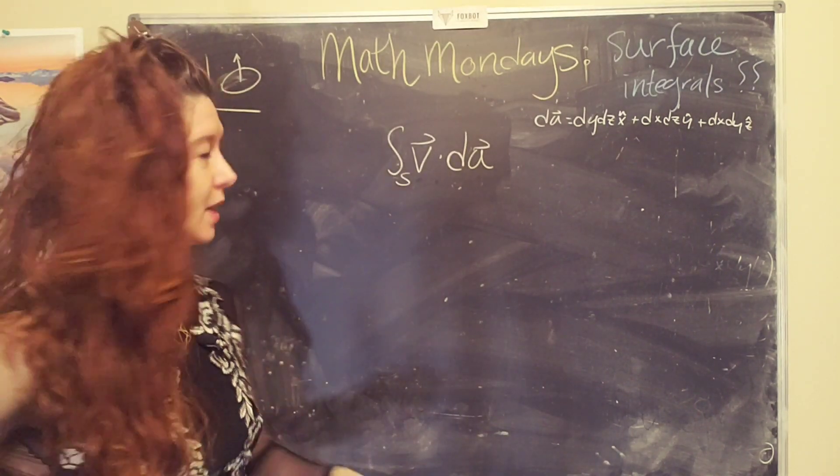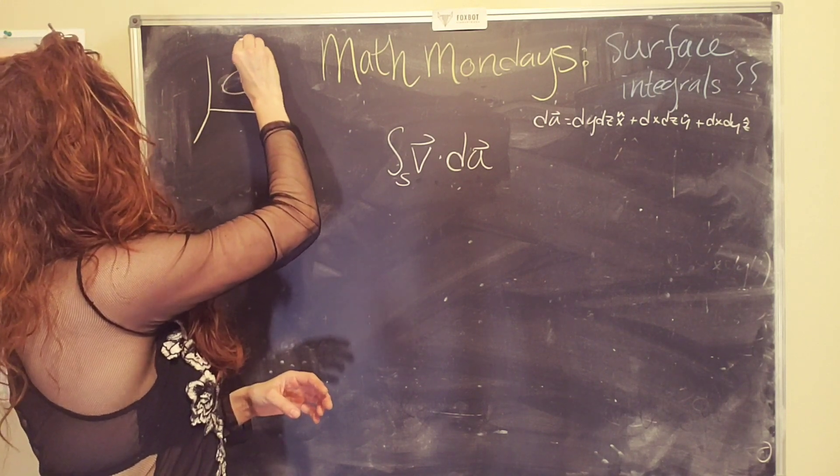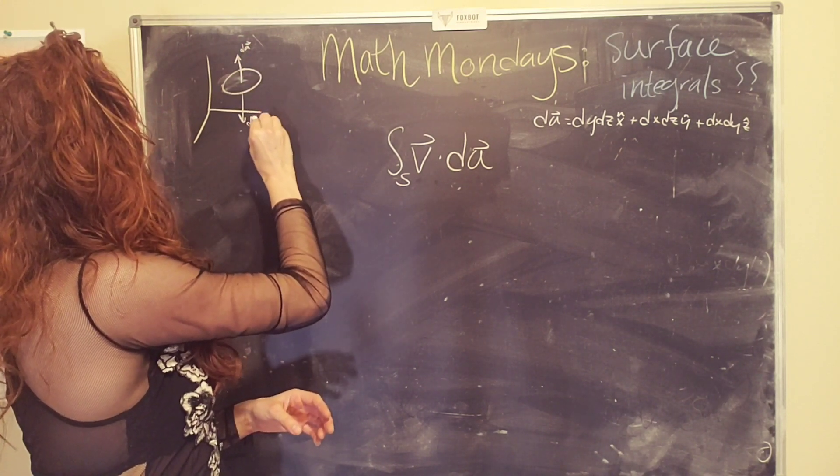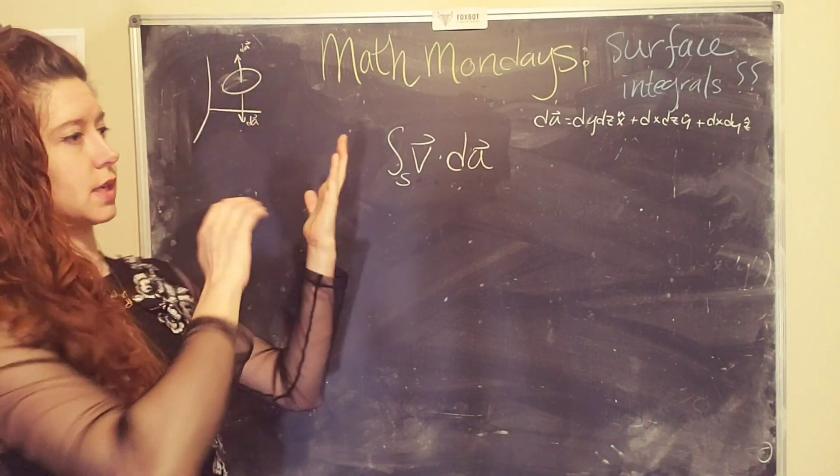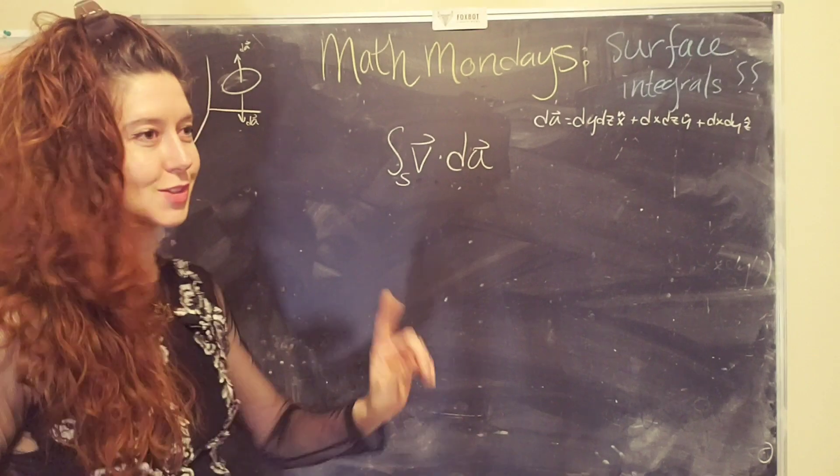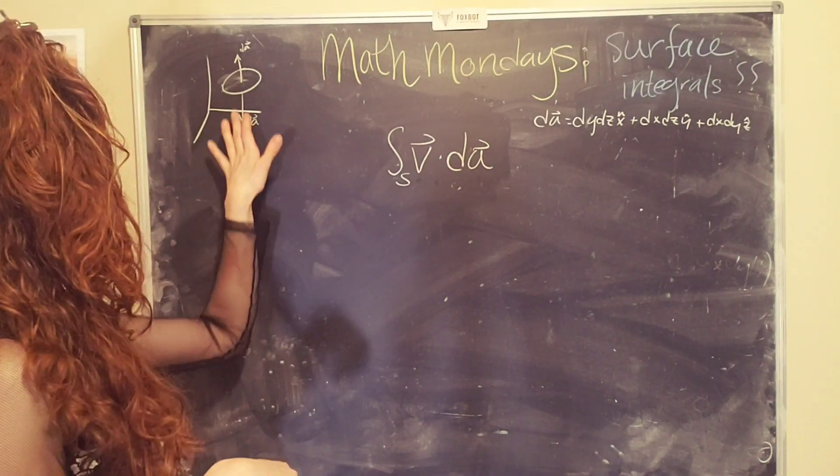Yes. Very important. So in this case you could have dA pointing outward in this way, or maybe you could have it pointing downwards in this way. They mean different things, right? If you have just a surface like this, it's kind of arbitrary. And since you're the one wielding the chalk or pencil or whatever it is, you get to decide which way is positive.